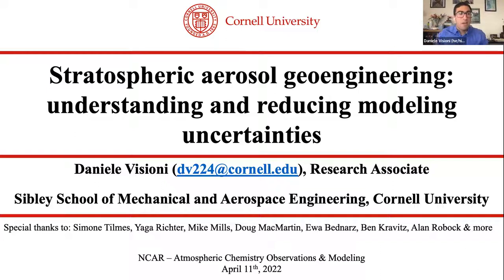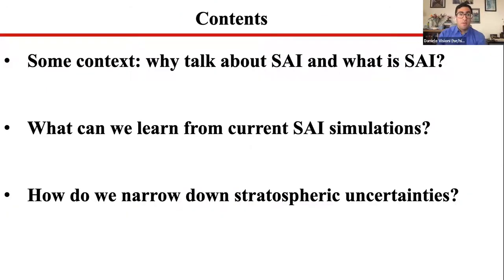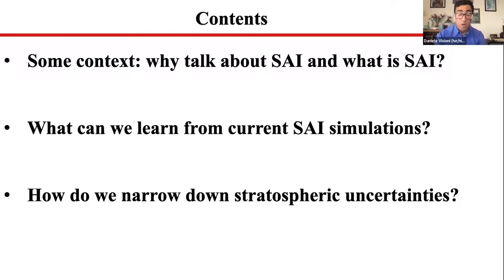Today I'd like to give a bit of an overview on stratospheric aerosol geoengineering, mostly focusing on understanding what the uncertainties are when it comes to modeling geoengineering, and giving an idea of how we can move forward and reduce some of these uncertainties. I will talk about stratospheric aerosol injection, or SAI. Why do we talk about SAI and what is SAI? What we can learn from current CMIP6 simulations run with GeoMIP, and how do we narrow down stratospheric uncertainties tied to SAI?